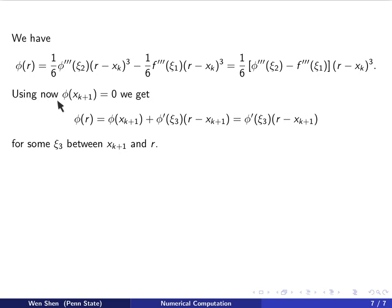And using now further that φ at xₖ₊₁ is 0, recall that's how we actually obtain xₖ₊₁. Then we can manipulate this expression as follows. So φ(r) would equal φ at xₖ₊₁ plus a φ prime at some ξ₃ multiplied by r minus xₖ₊₁.